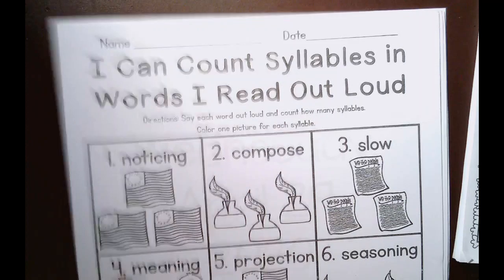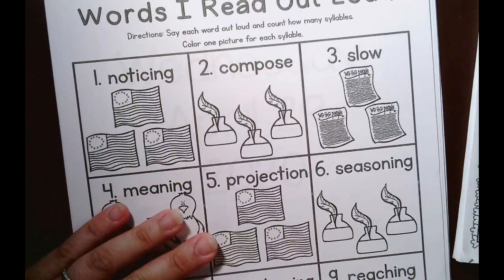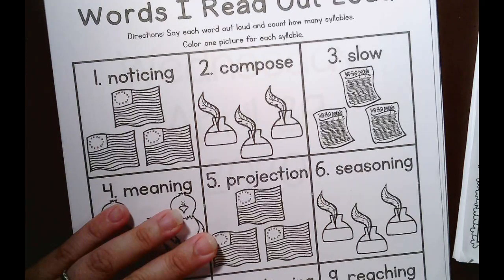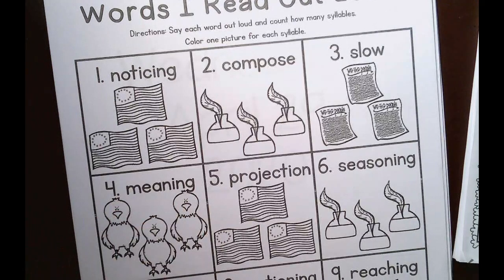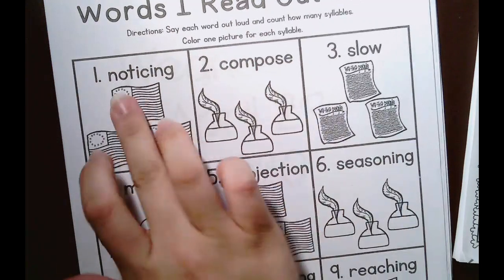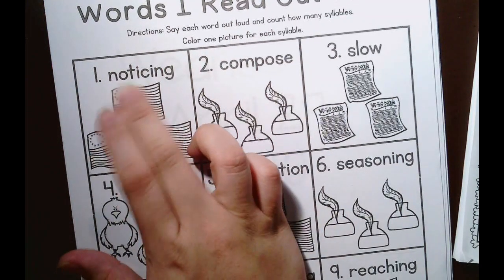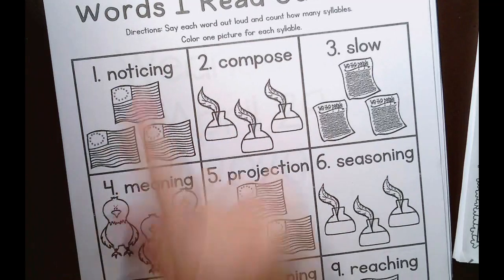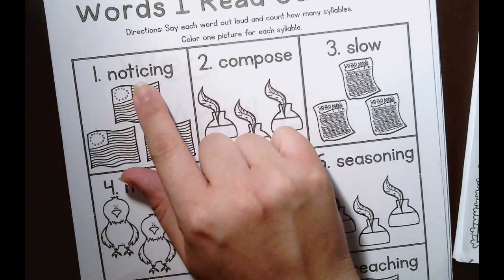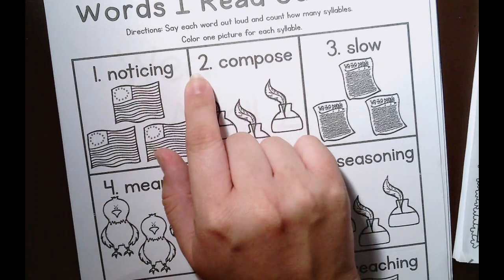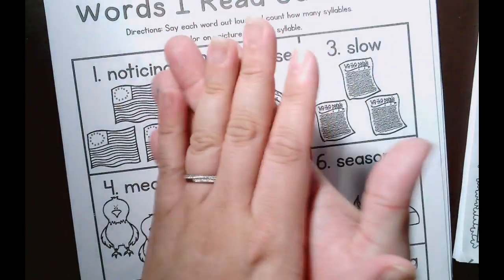So the first word is noticing. But I can't hear it automatically. Remember that each chunk or each syllable has only one vowel sound, so no-tis-ing, no-tis-ing. That's three.